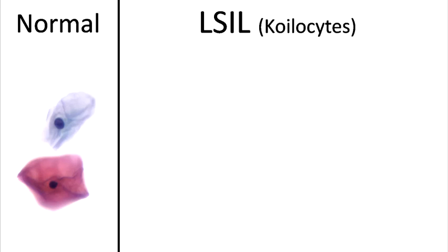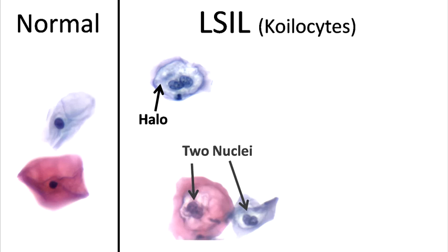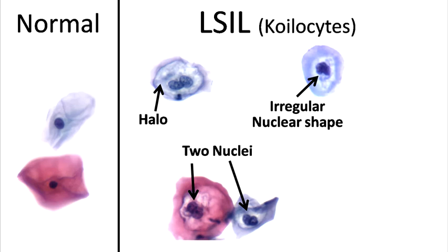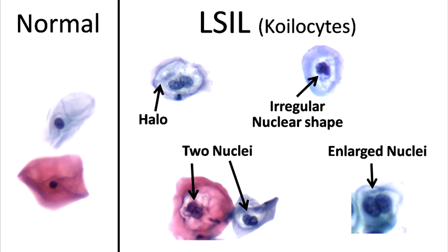Low-grade lesions usually have coilocytes. Coilocytes are virally infected cells that display features not typical of healthy epithelial cells. These features are haloing, multiple nuclei, nuclei with irregular shapes, or unusually large nuclei.